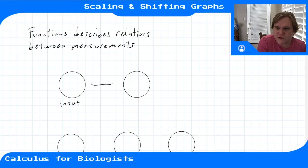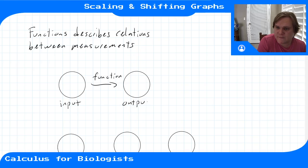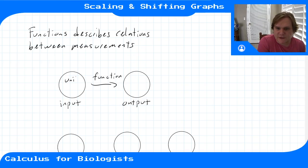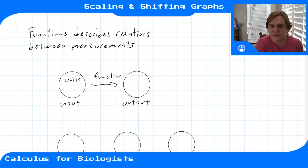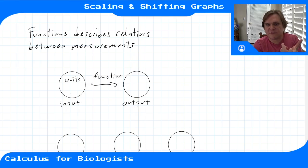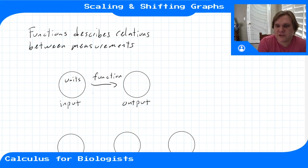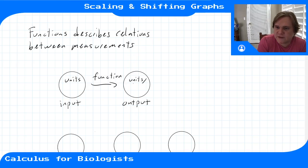Your input of your function maps to your output, and the input has some sort of unit. So maybe you're measuring it in feet or inches — the radius of a sphere — and then the function maps the radius to the volume. So it maps it to different units, different dimensions.